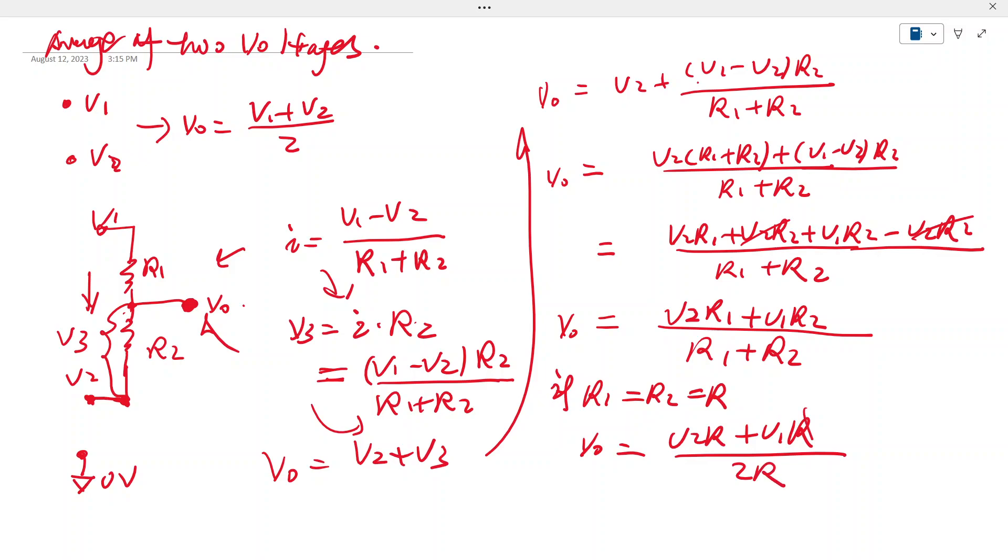We got Vout equals V2 R plus V1 R divided by 2R. The R cancels here and here. So we got V1 plus V2 divided by 2. So that's Vout.